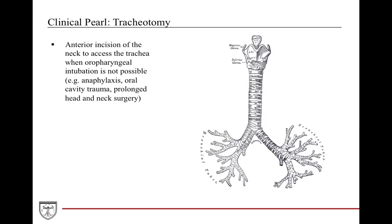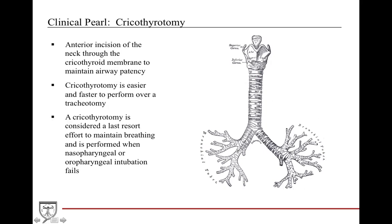Now for some clinical pearls. When airway management is critical and intubation cannot be achieved, you may have to perform a tracheotomy — an anterior incision of the neck to access the trachea when oropharyngeal intubation is not possible, such as in anaphylaxis, mid-face trauma, or oral trauma. It is a last-resort surgical access site via horizontal or vertical incision through the trachea. You can also do a cricothyroidotomy, which is an anterior incision through the cricothyroid membrane to maintain airway patency. It is easier and faster to perform than tracheotomy and is considered first-line when nasopharyngeal or oropharyngeal intubation fails.